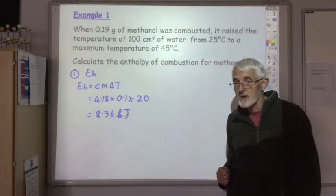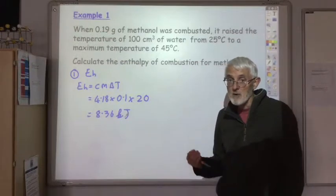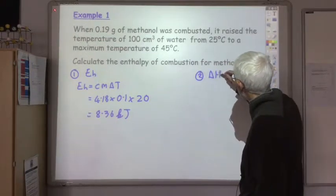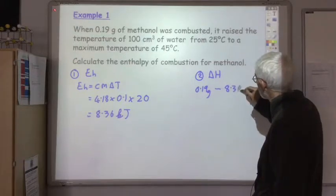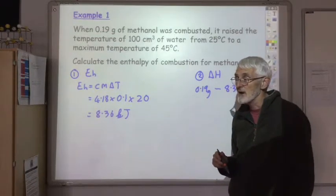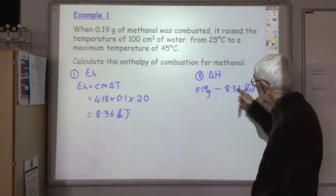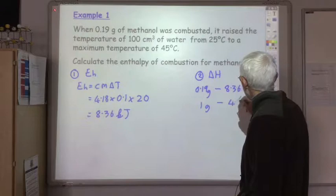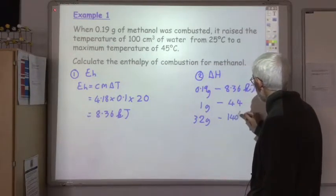You needed that calculation in National 5 but we have to go a bit further. What we want is not the amount of heat produced when we burnt 0.19 grams of methanol but how much heat would be produced if we burnt one mole of methanol. So in the second part of the calculation we want to change this into a delta H value. When we burnt 0.19 grams of methanol we produced 8.36 kilojoules, but I want to know how much energy we produced if I burnt one mole. The gram formula mass of methanol is 32 grams, so by direct proportion, if we divide through by 0.19 we get that one gram would give me 44 kilojoules, then multiply by 32 grams or one mole gives 1408 kilojoules.